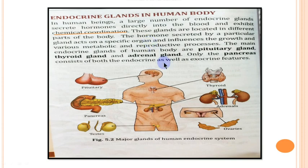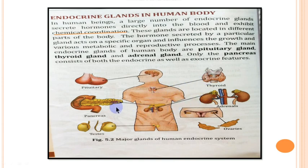This diagram depicts the various endocrine glands in the body. In the head region, the pituitary gland is present. In the neck region, the thyroid gland is present. The pancreas is present behind the stomach, and the adrenals are above the kidneys. In males, the testes are present, and in females, the ovaries are present.